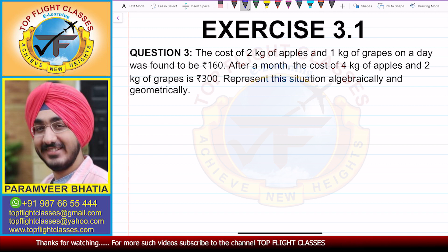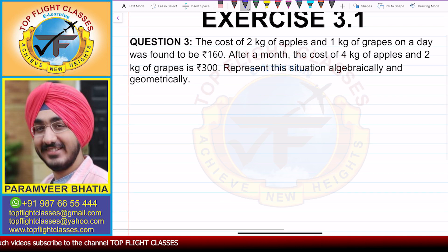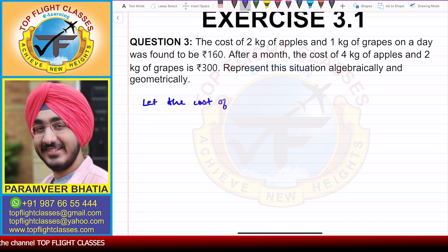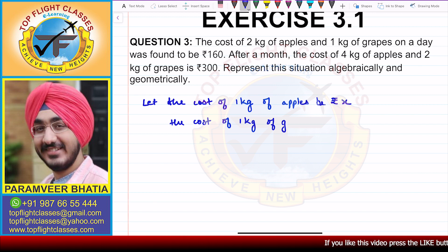Represent this situation algebraically and geometrically. For this, first of all, let us say that the cost of 1 kg of apples is rupees X, and the cost of 1 kg of grapes is Y.